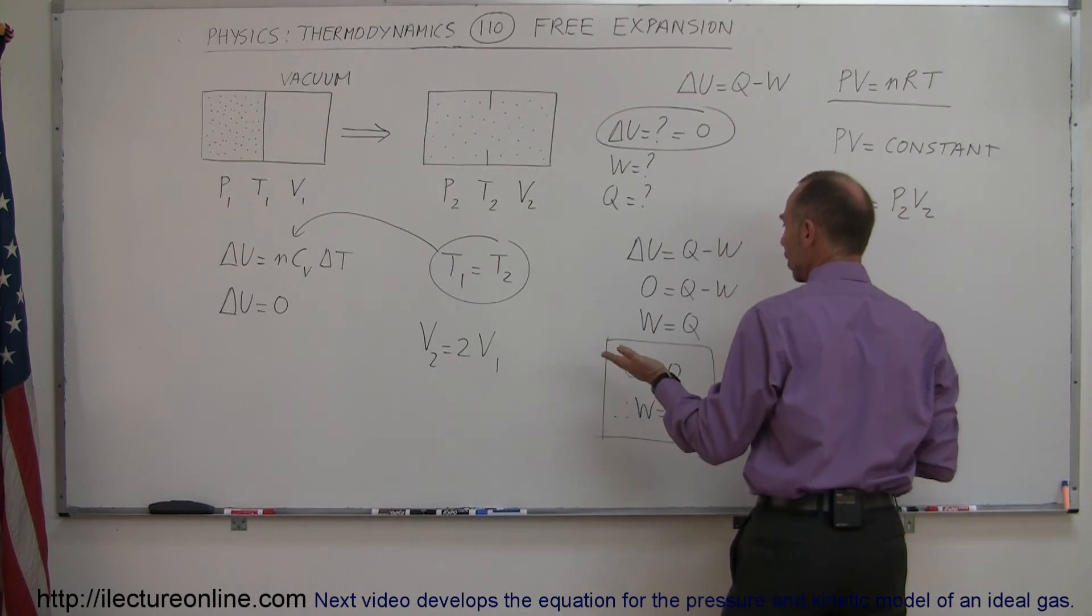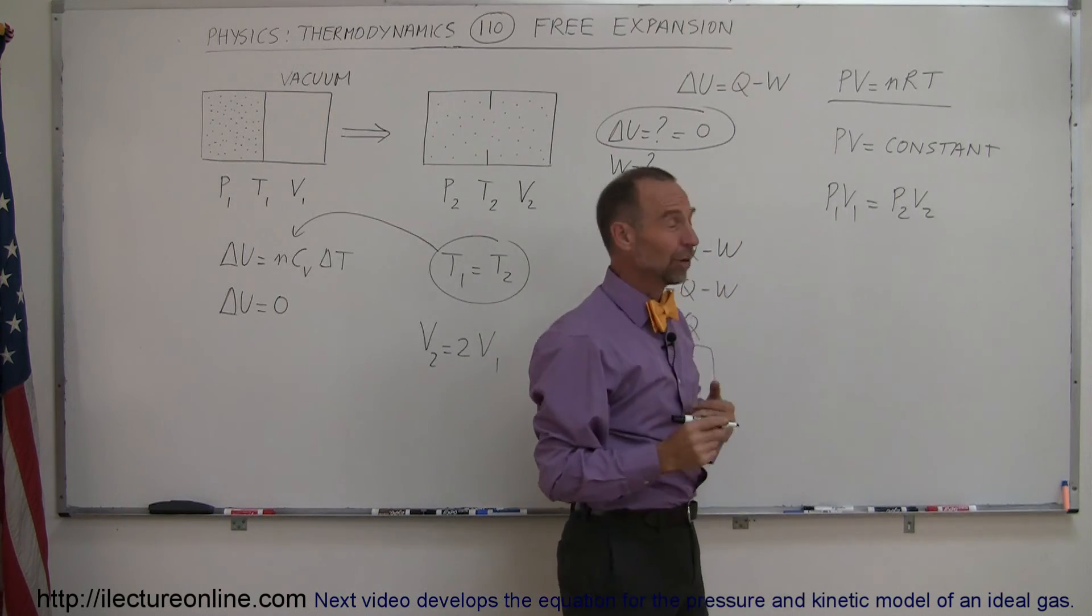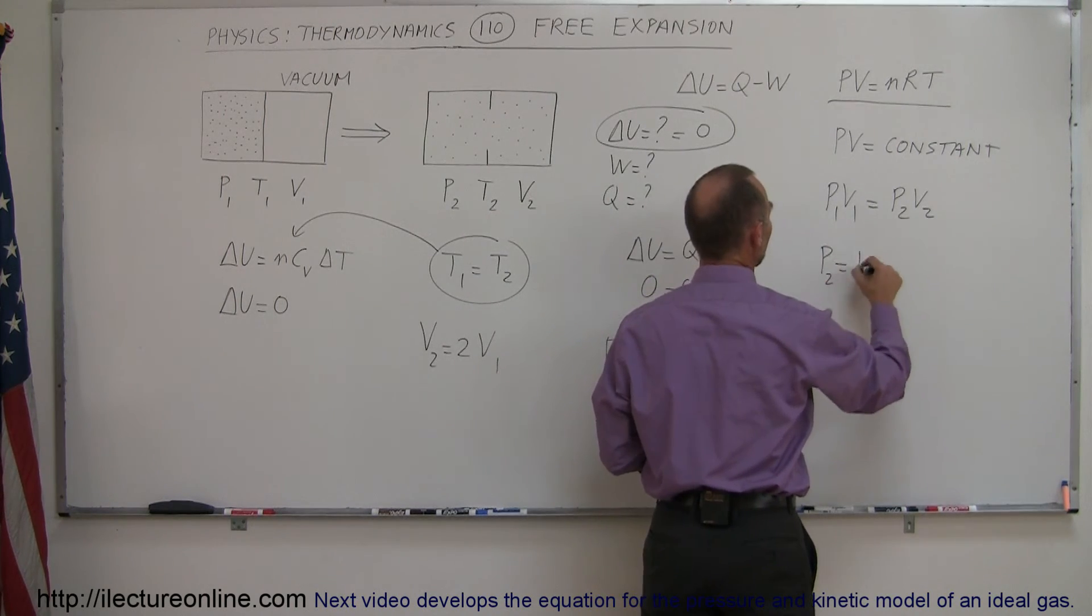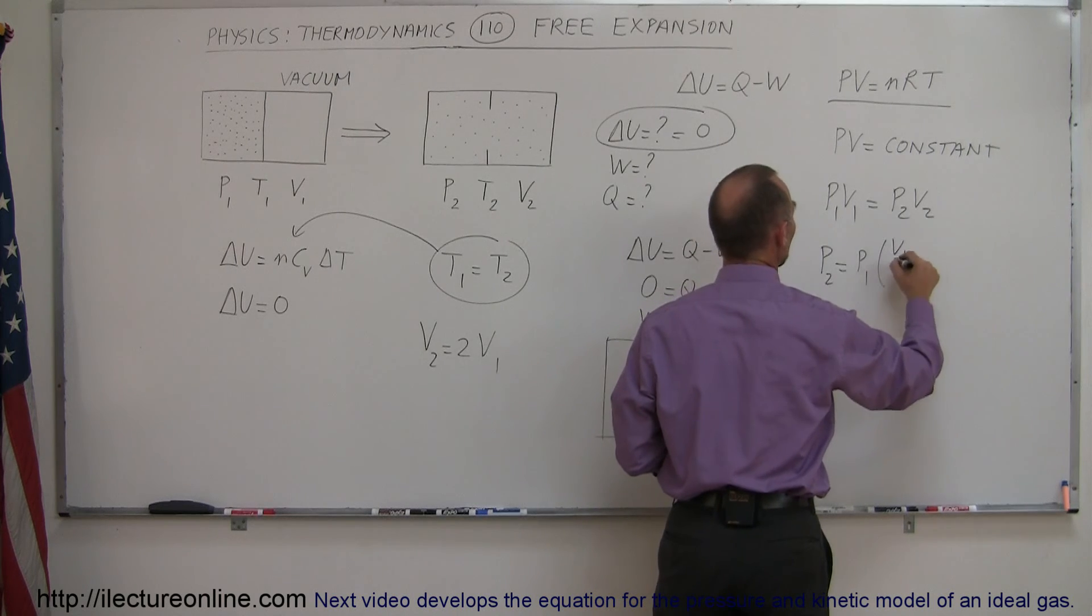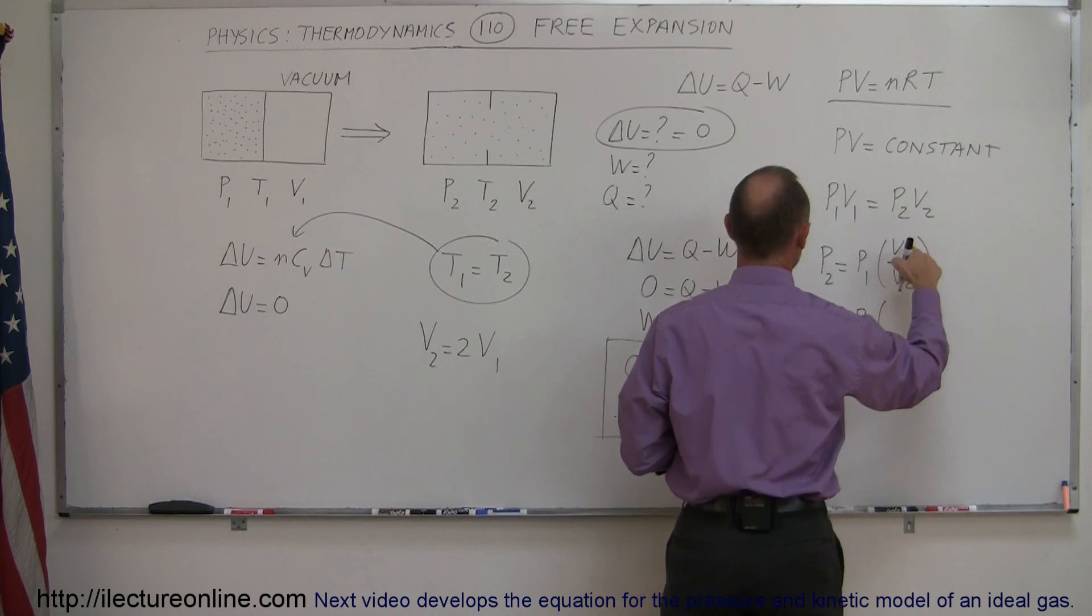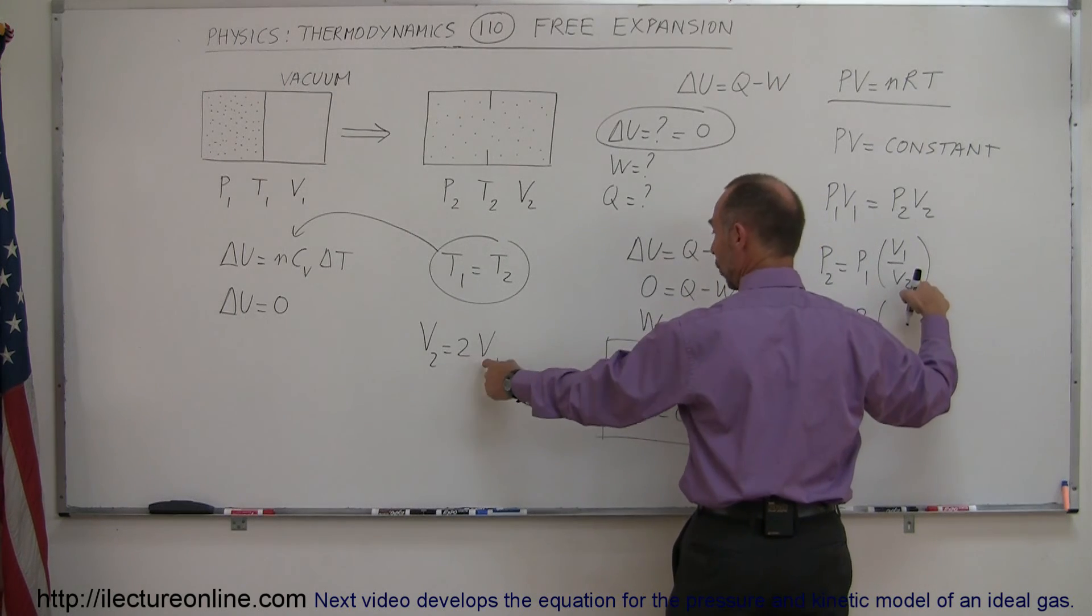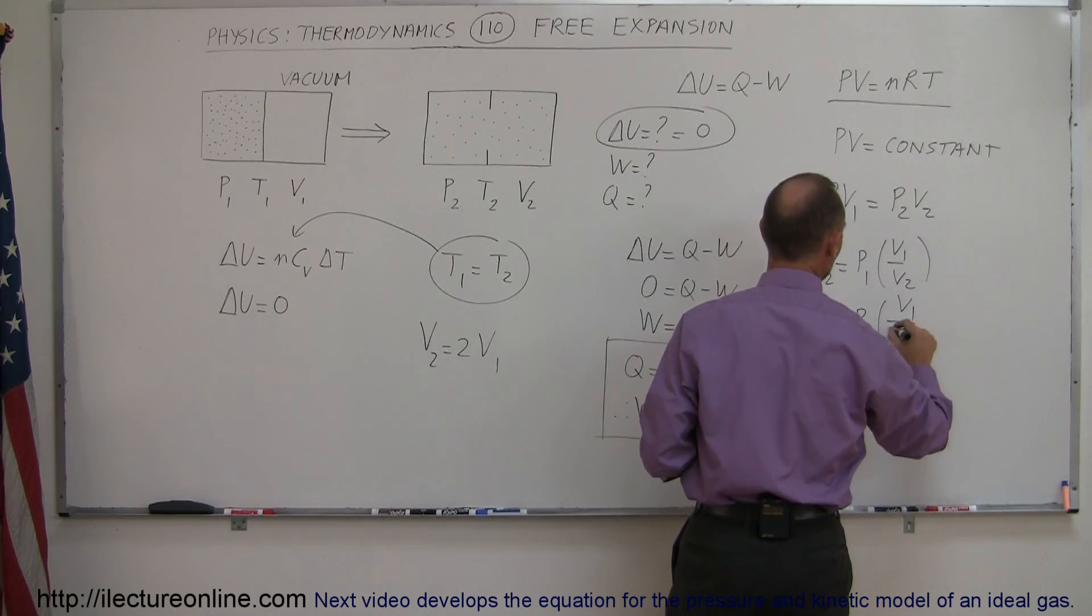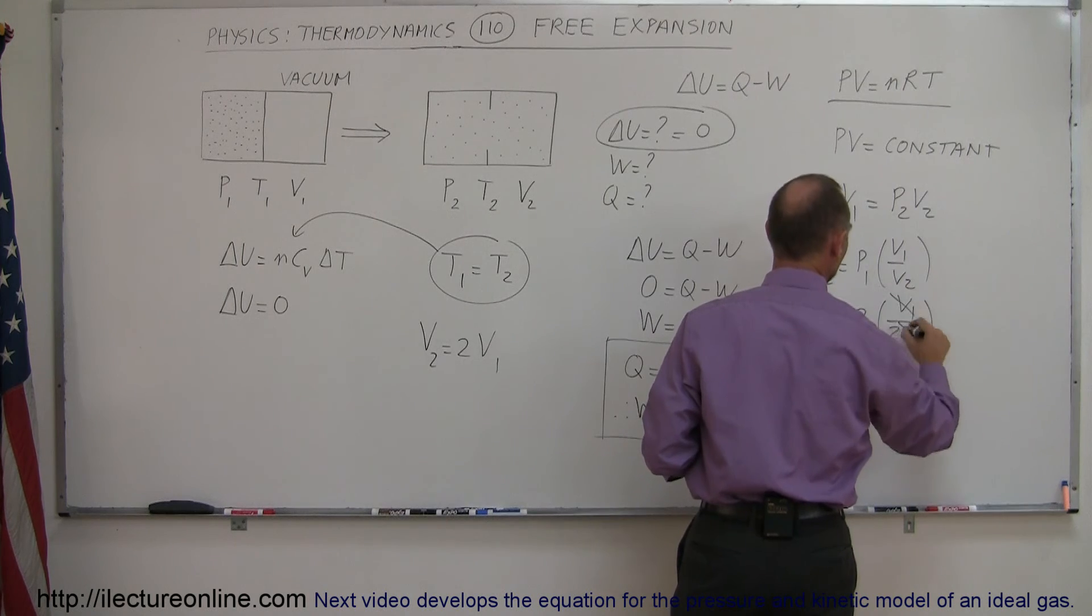And since V2 changes, that means pressure 2 has to change as well. So P2 is equal to P1 times the ratio of V1 over V2, and that's equal to P1 times, now V2 is twice V1, so that's V1 divided by 2 V1, and that cancels out.